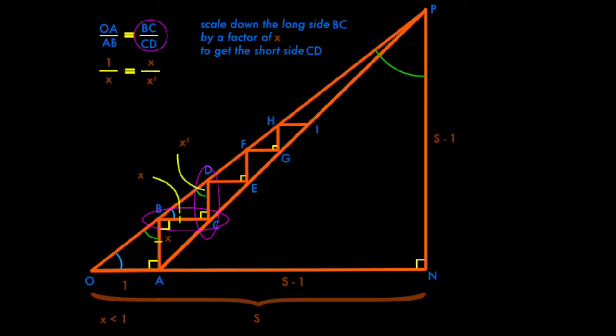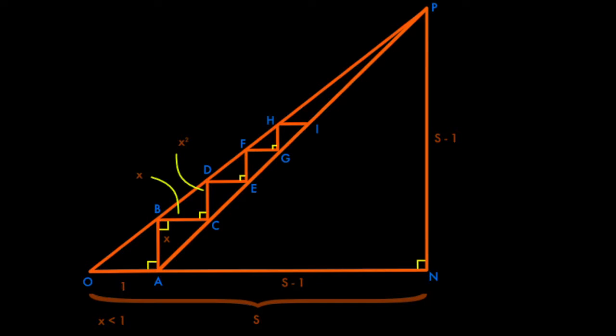The ratio tells us that to go from the long side on the bottom OA to the short side on the right AB, we multiply by X. So the same thing again. When we go from the long side of the bottom BC to the short side on the right CD, we multiply by X. So X times X is X squared. So here we label CD with the length X squared.